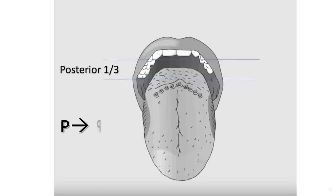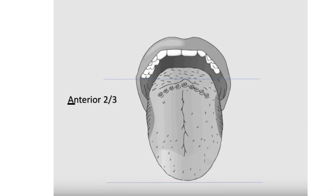A good way to remember what innervates the posterior third of the tongue is to take the P and when you flip the P around it looks like a nine. This way you can remember that it's cranial nerve nine or the glossopharyngeal nerve, and this provides sensory and taste innervation to this region of the tongue.